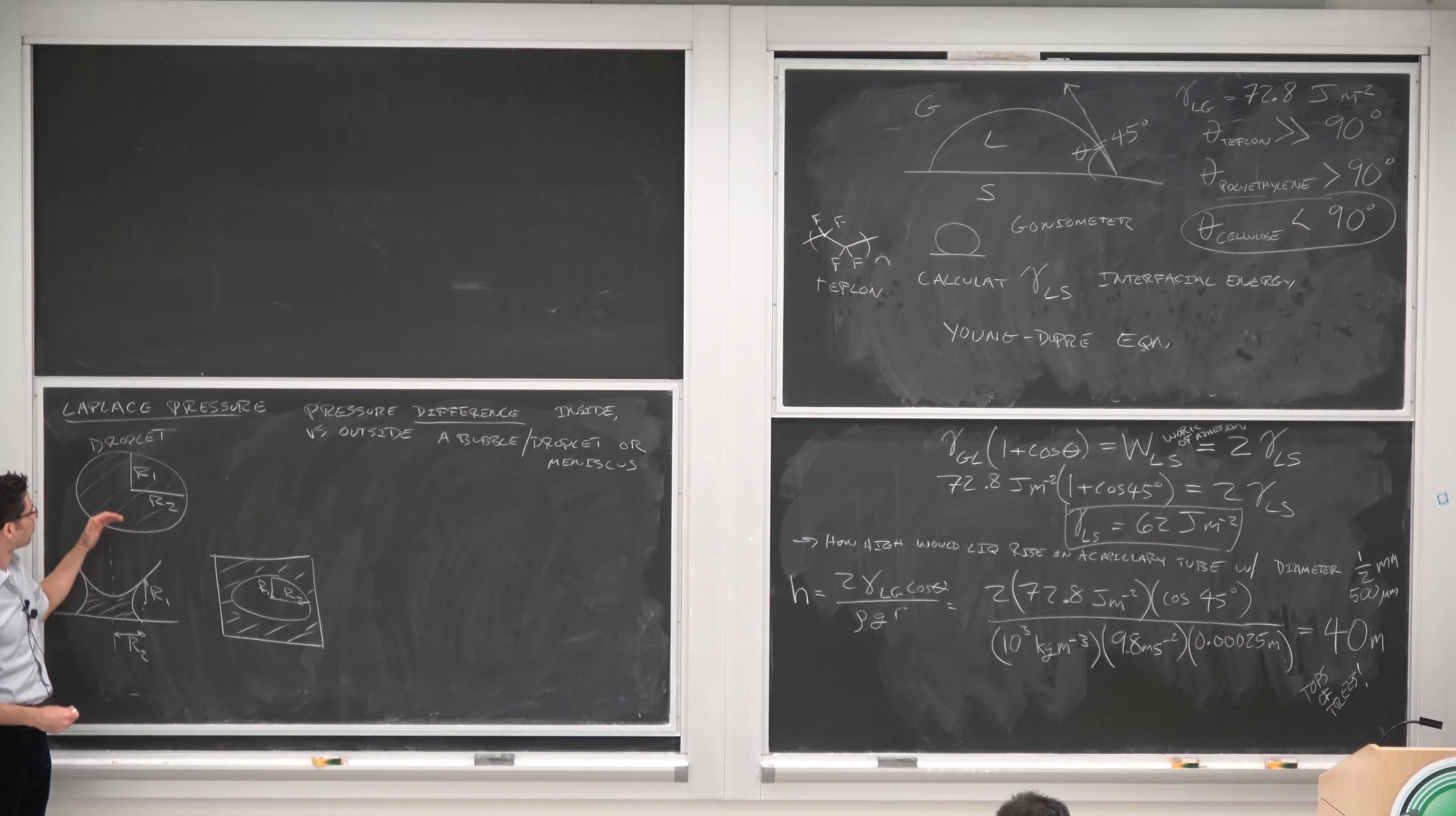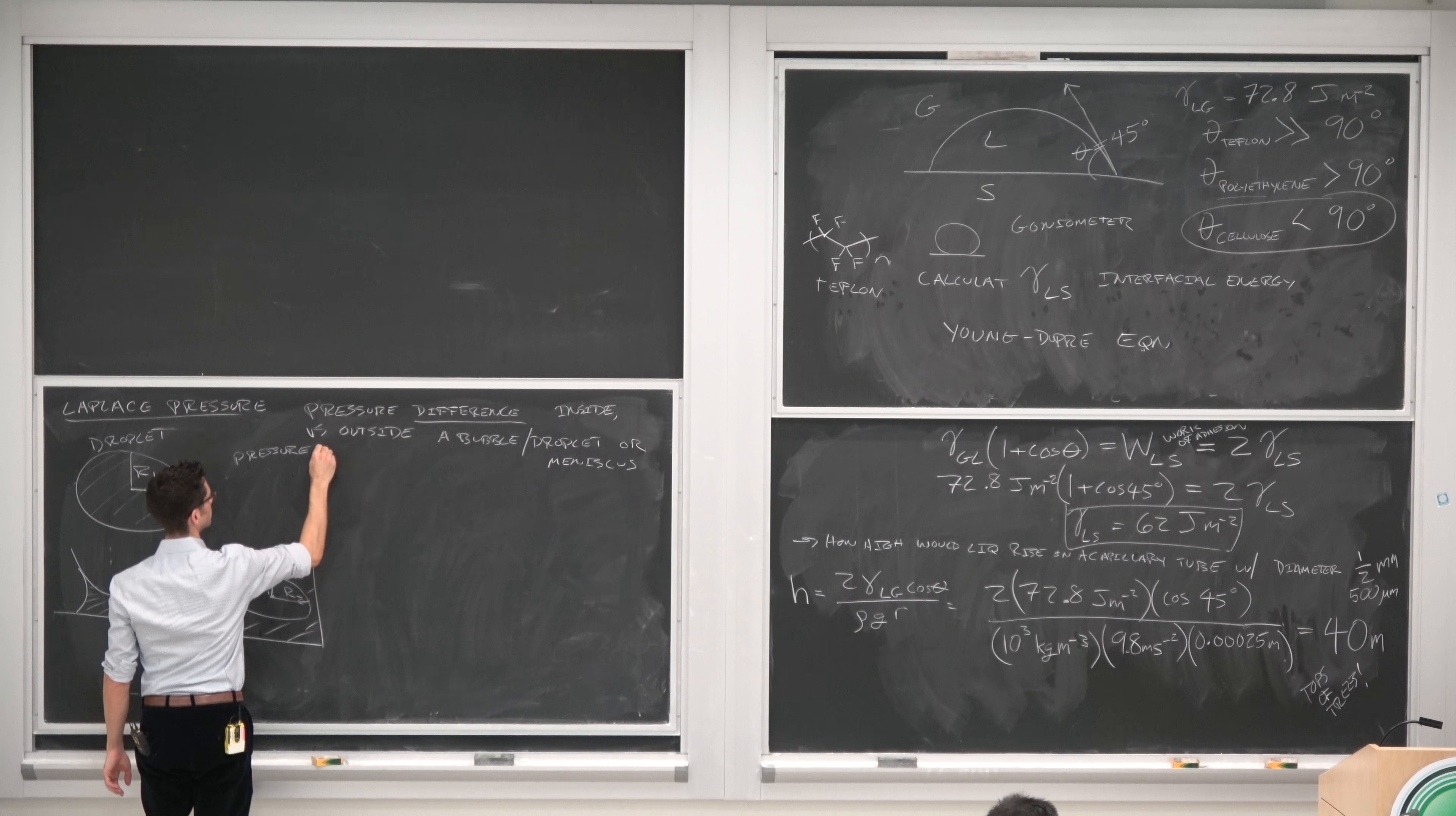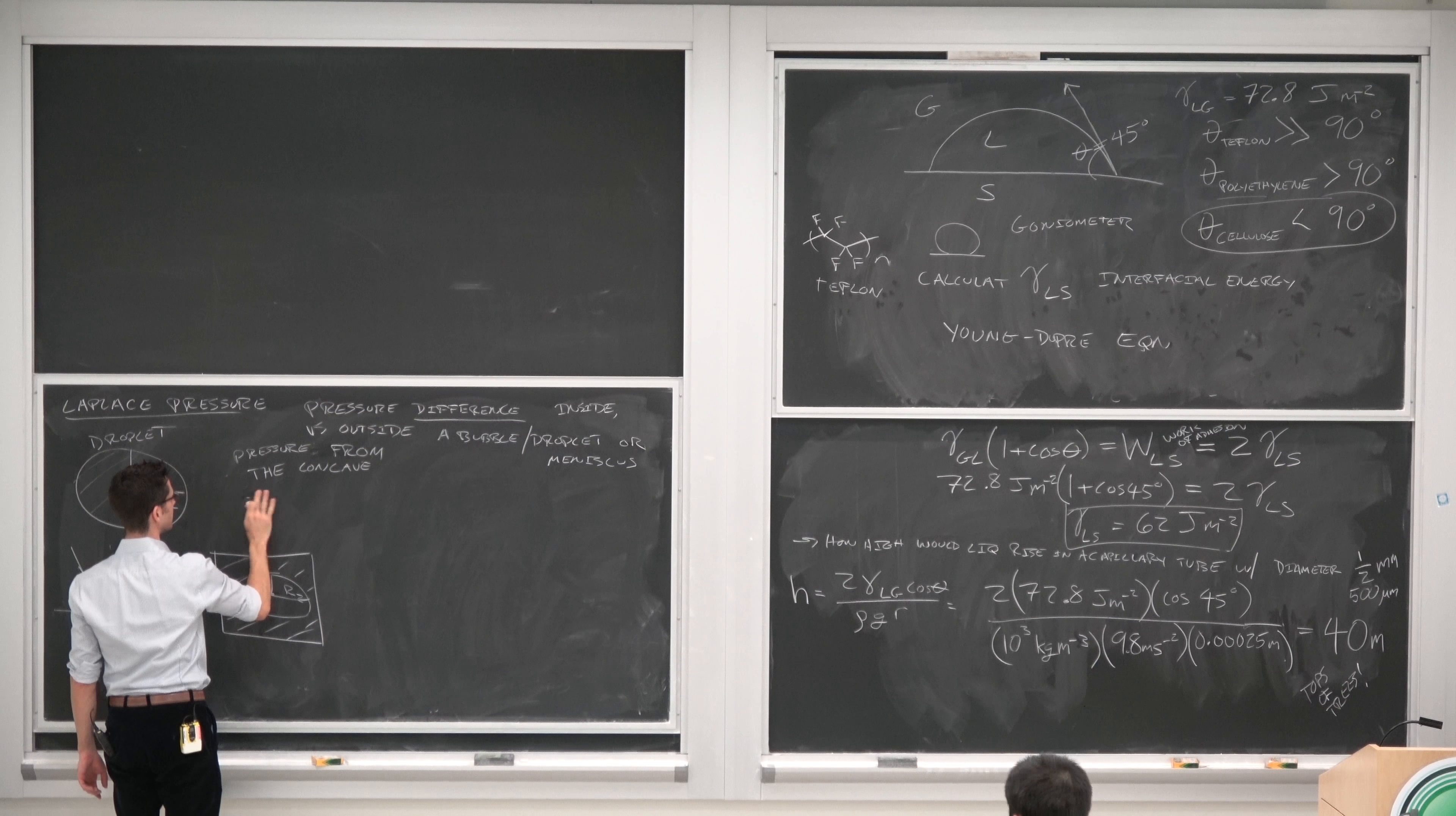And the pressure produced by this squeezing due to the surface is the Laplace pressure. The Laplace pressure always points in the direction, it serves to deform an object in its concave direction. The pressure vector emanates from the concave direction. I don't know how to spell emanates, so I'm just going to say from.